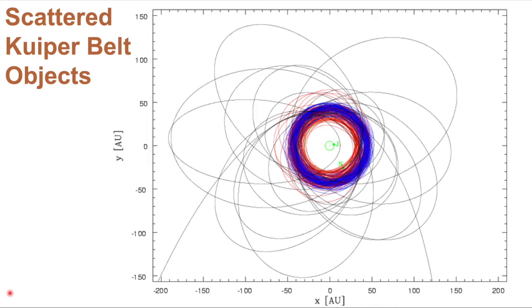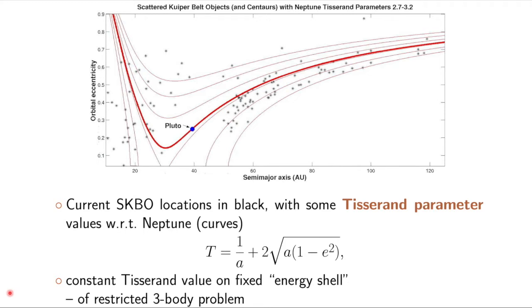Let's consider the scattered Kuiper Belt objects. This is a view in the inertial frame. If we look at it in terms of semi-major axis and orbital eccentricity, I've shown some of the scattered Kuiper Belt objects as black stars and Tisserand parameters.